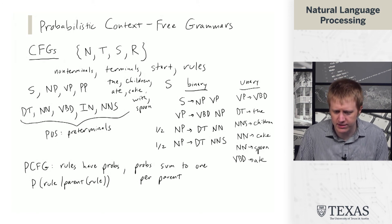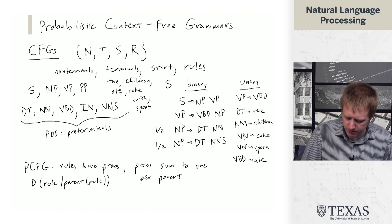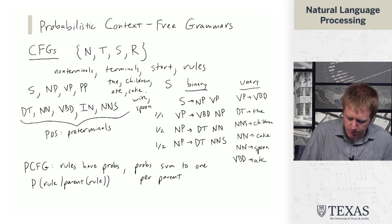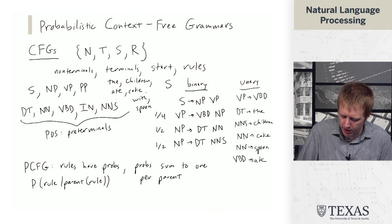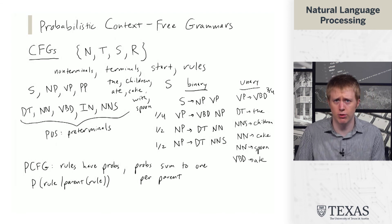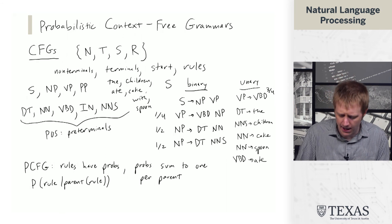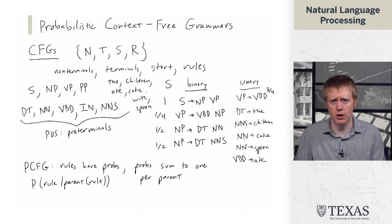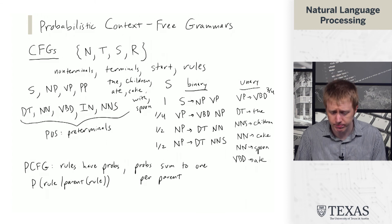In this case, VP goes to VBD NP. Maybe this one would have probability one-fourth, and our unary rule would have probability three-fourths. These are our two rules that involve VPs. This S rule has to have probability one because there's only one rule for S here.